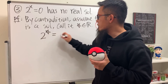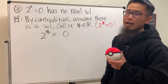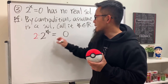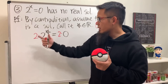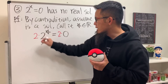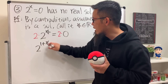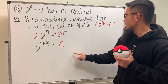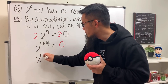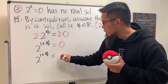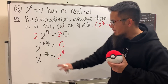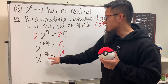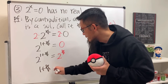Now multiply both sides by 2. On the left, using exponent rules with base 2, we get 2^(1+★). On the right, 2 times 0 equals 0. But 0 is the same as 2^★, so 2^(1+★) = 2^★. Since the bases are the same, we get 1 + ★ = ★.